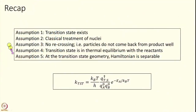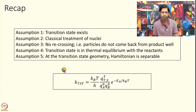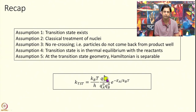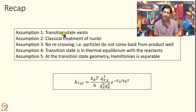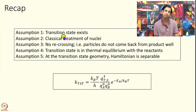The transition state rate we derived is given here — we wrote a formal derivation of this. This derivation works under 5 assumptions. The first assumption is that the transition state exists. The transition state is the structure which is the maximum energy structure along the reaction path and the minimum energy structure along the coordinate perpendicular to the reaction coordinate.